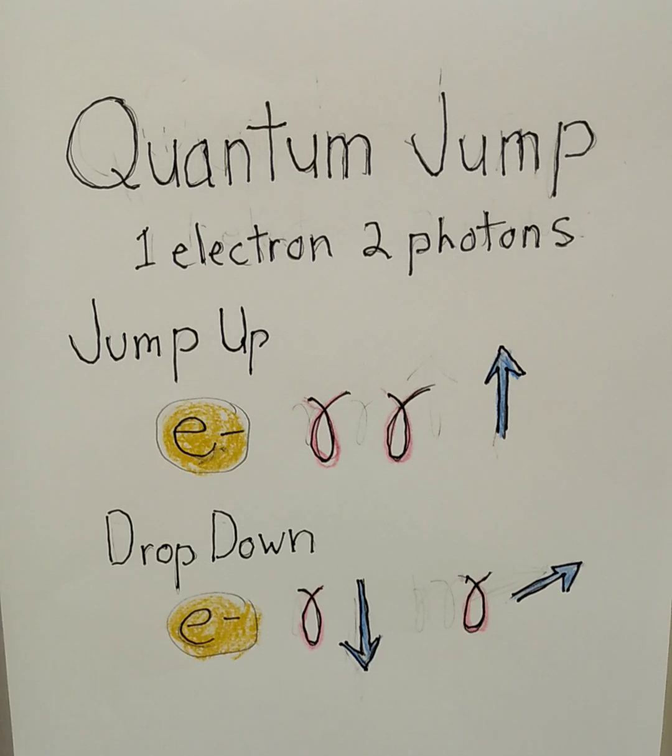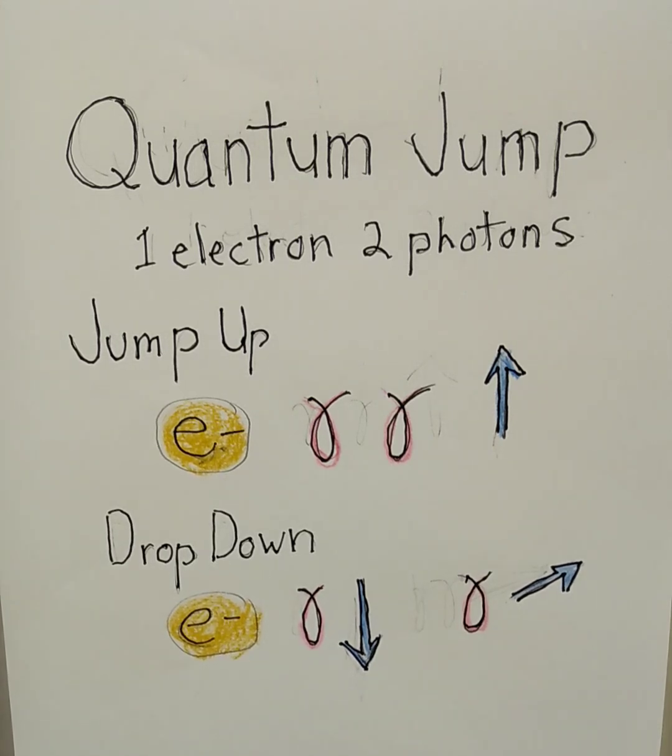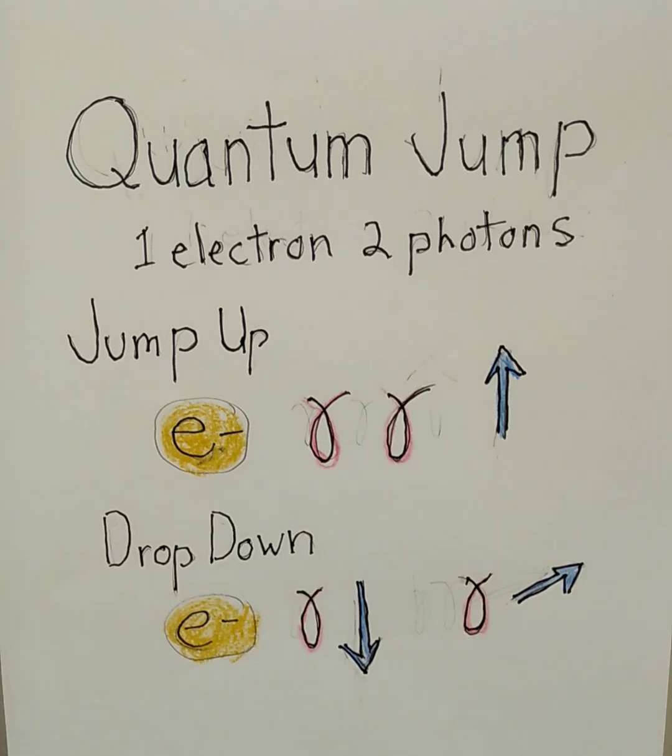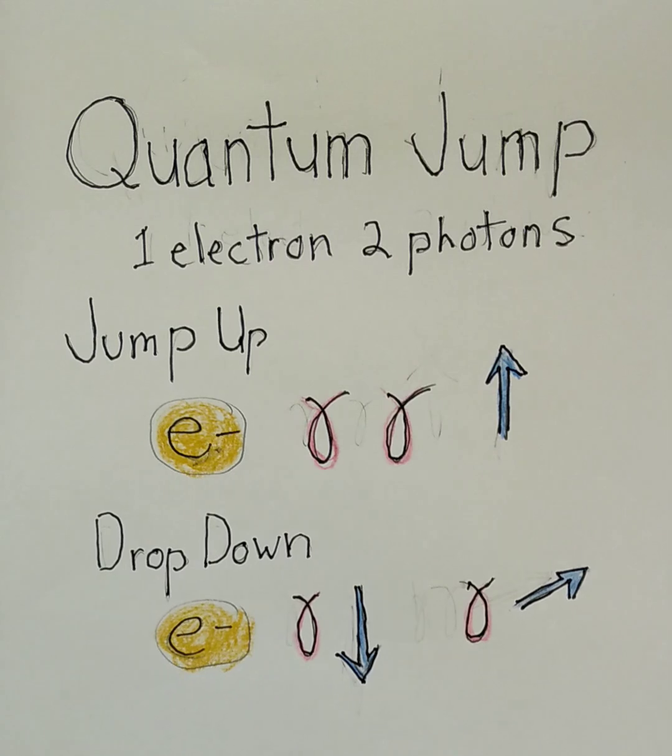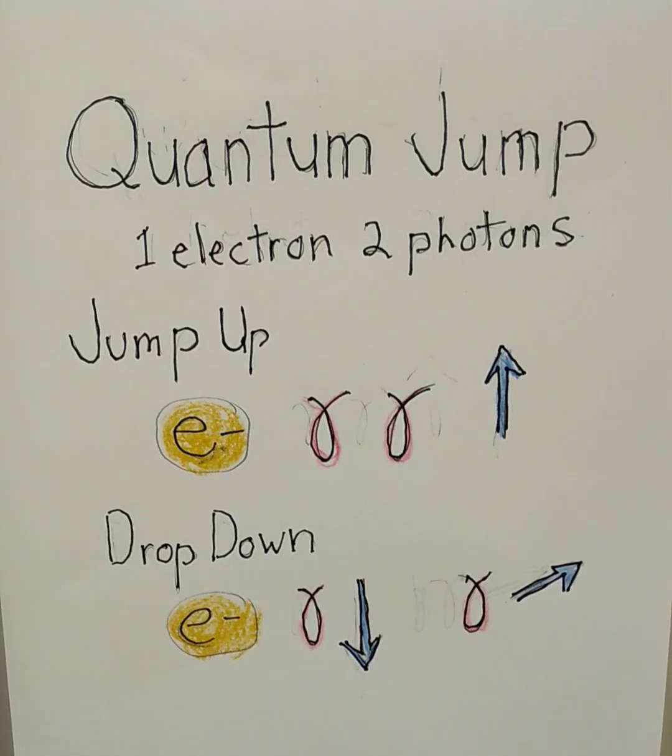Case 1. When the electron drops down to an orbital, one photon is used to power the drop. The other is released. One photon energizes the electron to drop to a lower orbital. The extra photon escapes the atom into space.